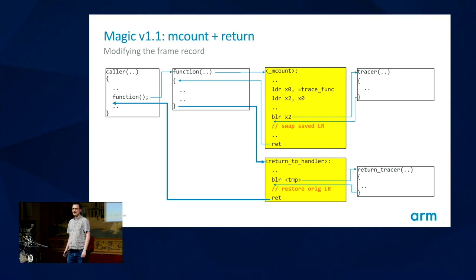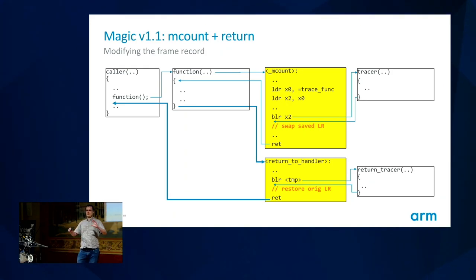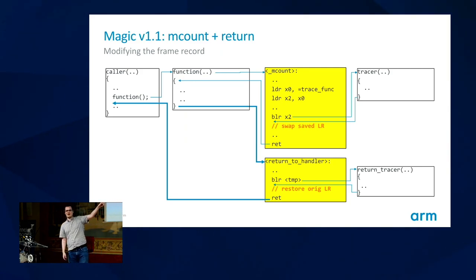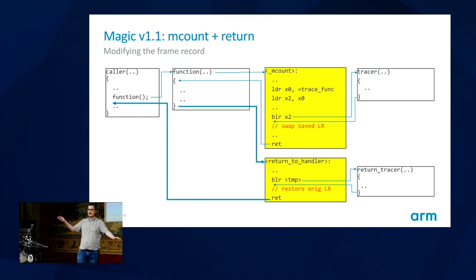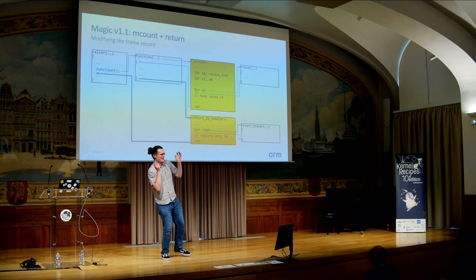Q: Suppose you take an interrupt inside the tracer function, and that gets to a function that's also traced. A: Exception handling saves and restores everything necessary, so it's transparent to the interrupted context. There are special rules on whether trace functions can themselves be traced, to prevent infinite recursion — but that's enforced by the FTrace core code.